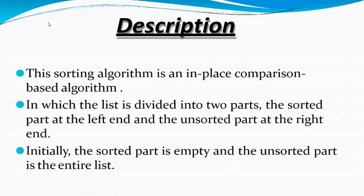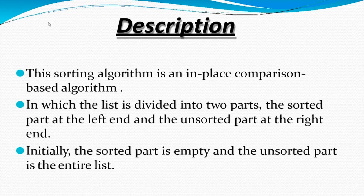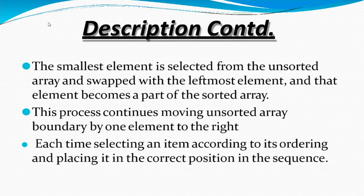Selection sort is an in-place comparison-based algorithm. The list is divided into two parts — the sorted part is placed at the left end and the unsorted part at the right end. Initially the sorted part is empty, so we take the whole array as unsorted. We start by traversing to find the smallest element. For example, with six elements, if the smallest is at index five, we swap it to the first position, and that becomes the sorted list.